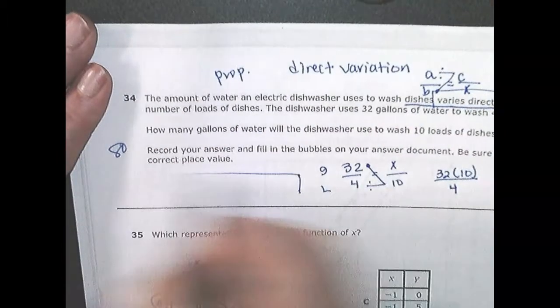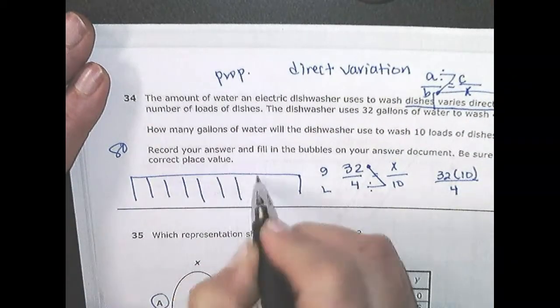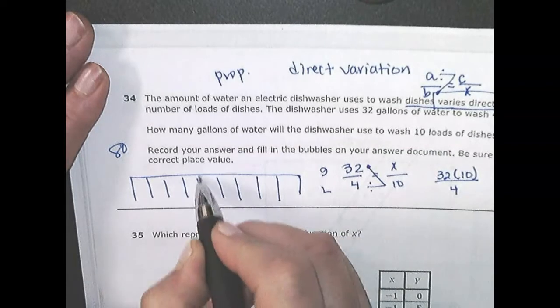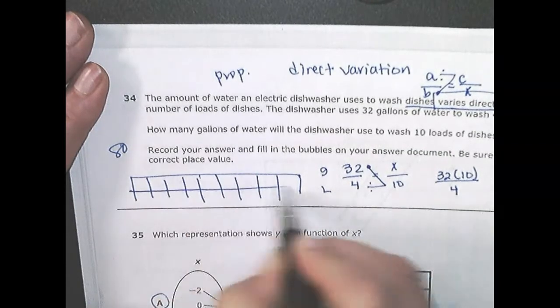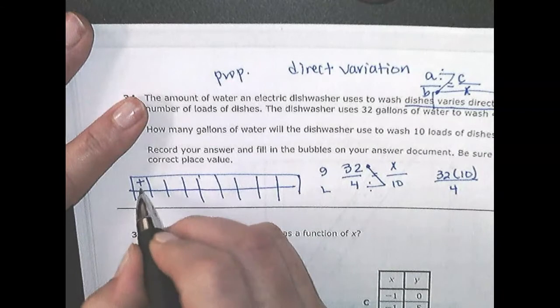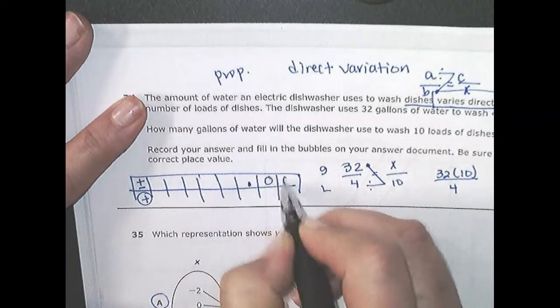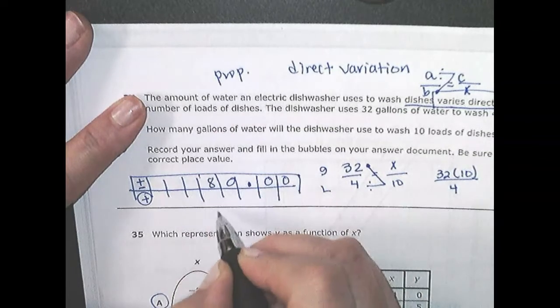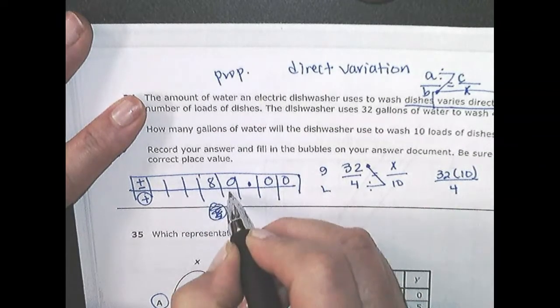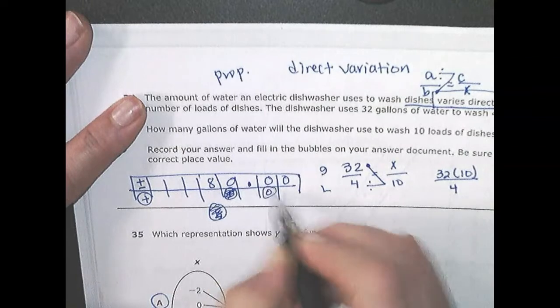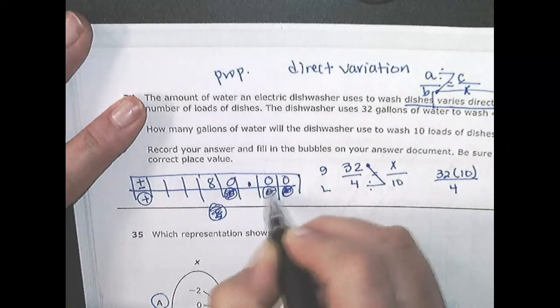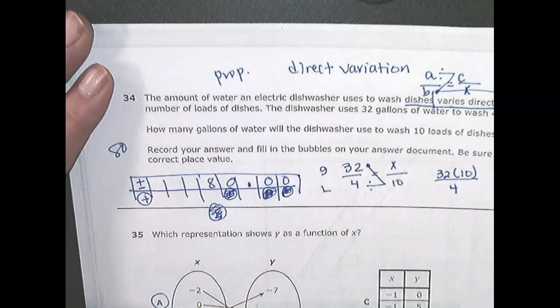And I got eighty. So thirty-two times ten divided by four. Eighty. Put that in a griddable. So your griddables. And that needs to be eighty dollars. So it's definitely positive. Decimal goes here. Zero, zero. Eighty. You have to bubble the eight. You have to bubble the zero. Zero, here's another zero, here's another zero. Bubble those two. Perfect. Next.